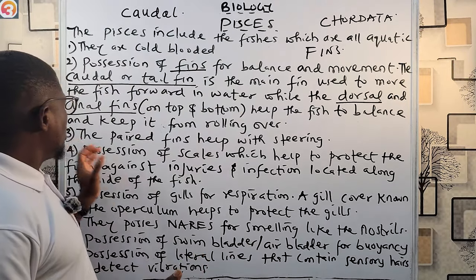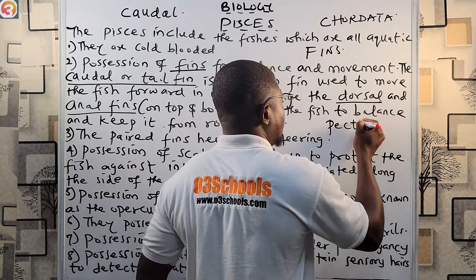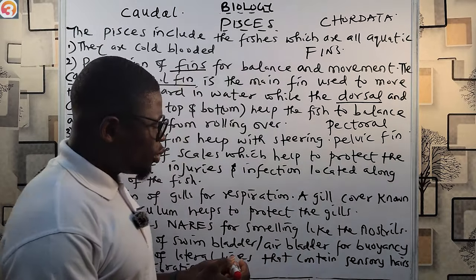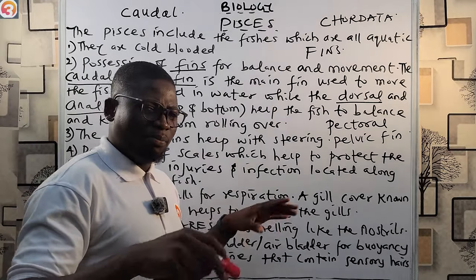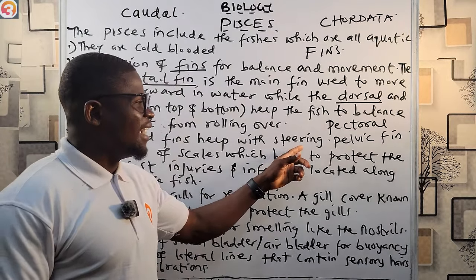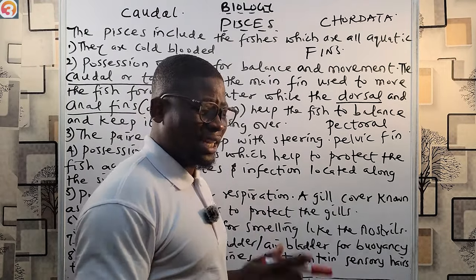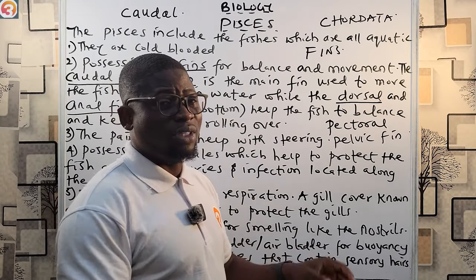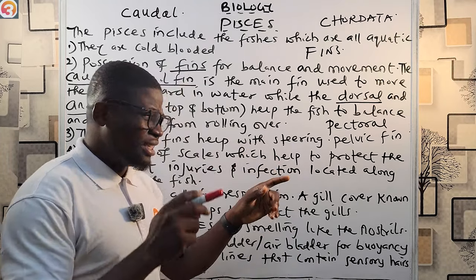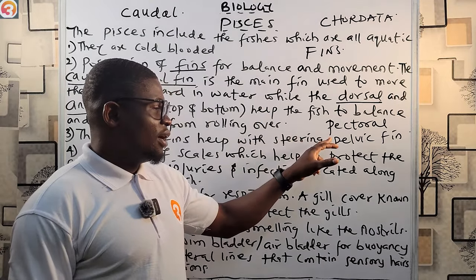Number three: fishes possess paired fins for steering. The paired fins referred to here are the pectoral fin and the pelvic fin. These fins help the fish with steering — S-T-E-E-R-I-N-G. This has appeared in past exam questions before.